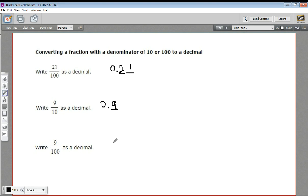Here we have 9 over 100. So because it's hundreds, we're going to have two places. So the last place here is the hundredths place. That's where the nine goes. And here you'll fill in with a zero. So nine one hundredths is 0.09.